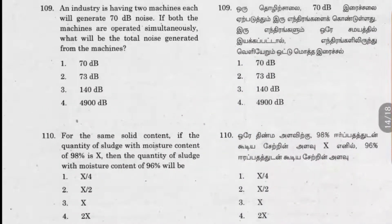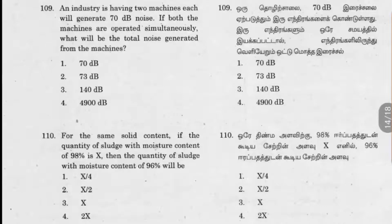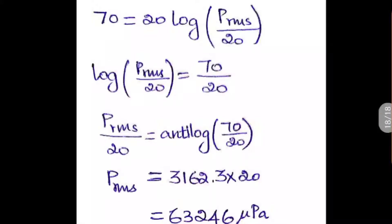Question 109: An industry has two machines, each generating 70 decibel noise. If both machines are operated simultaneously, what is the total noise generated? This answer can be written directly based on formulas, but let me show you the formula approach. The formula is: decibel equals 20 log of P_RMS divided by 20 µPa, where 20 µPa is the standard reference pressure and P_RMS is the root mean square pressure. We want to find P_RMS for 70 decibels.